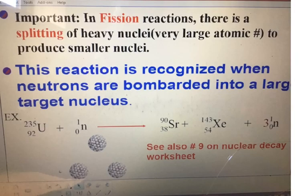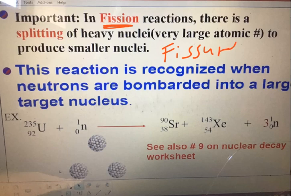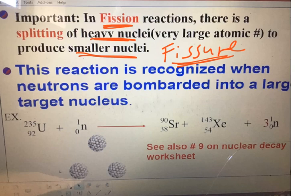Moving on — in earth science you've learned about fission. Think of a fissure — a crack or break in the ground. So in fission you're basically breaking apart a large heavy nucleus into smaller ones. Classically, they use neutrons and smash them — bombard them — into a large target nucleus.